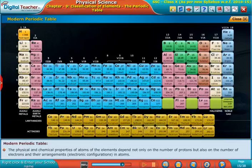The physical and chemical properties of atoms of the elements depend not only on the number of protons but also on the number of electrons and their arrangements, or electronic configurations, in atoms.